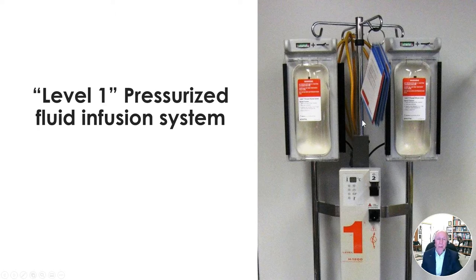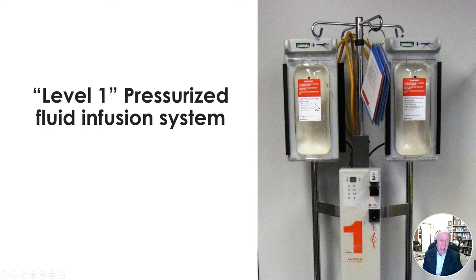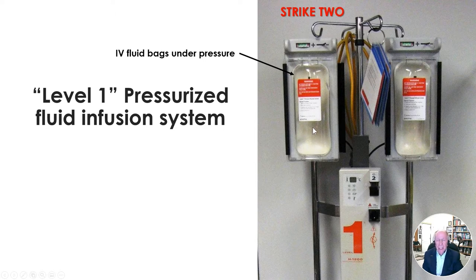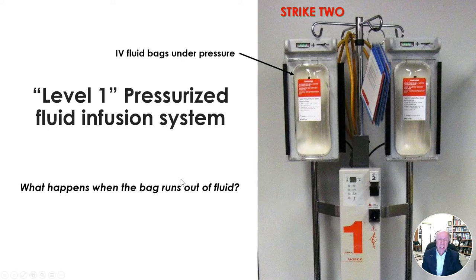Suppose we need to give that fluid rapidly—maybe it's a trauma patient who has lost a lot of blood. We need to squeeze the bag to get fluid in faster than gravity would allow. There are devices for that, such as the Level One, which pneumatically compresses the bag so fluid runs in faster. The bag is under excess pressure—that's strike two. And strike three is when the bag runs out of fluid and the 200 cc's of air are pumped into the patient.